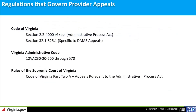Provider appeals are governed by the Code of Virginia, Section 2.2-4000, also known as the Administrative Process Act; the Virginia Administrative Code, Chapter 12, Sections 30, 20, 500 through 570; and the Rules of the Supreme Court of Virginia and the Code of Virginia, Part 2A, Appeals Pursuant to the Administrative Process Act.